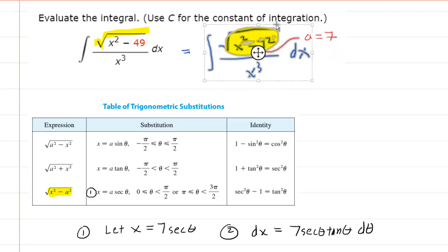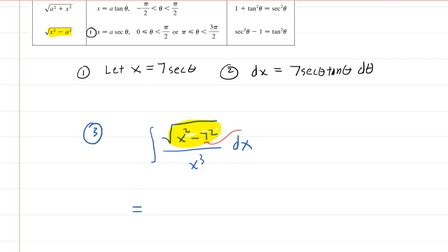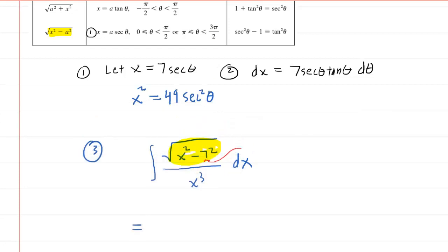Now what we need to do is take our original problem and make a series of strategic substitutions. Since x equals 7 secant of theta, if you square both sides, you get x squared equals 49 secant squared of theta. By the same token, we are going to cube that original substitution. Cubing both sides gives x cubed equals 343 secant cubed of theta. We chose x squared and x cubed because that is what appears in the original expression.